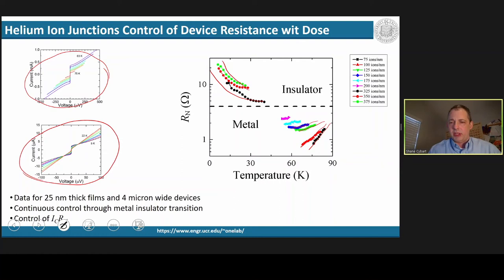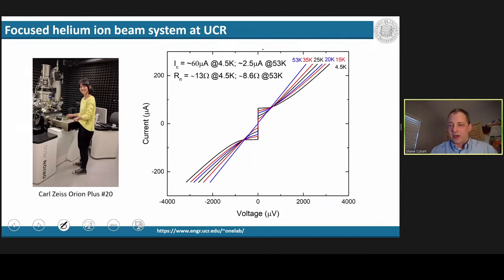After those initial experiments, I bought that helium ion microscope and brought it to Riverside. My students and I have been working on improving the junctions. And here's a set of nearly ideal current voltage characteristics for a high-TC insulating barrier junction. It ranges all the way from 53 Kelvin down to 4.5 Kelvin with nearly ideal characteristics.